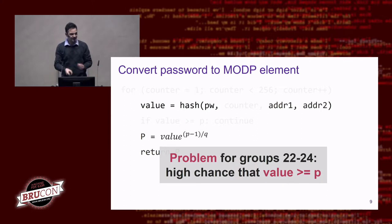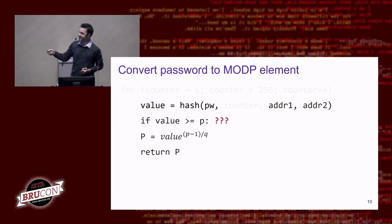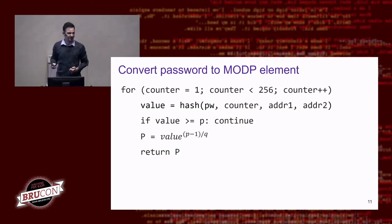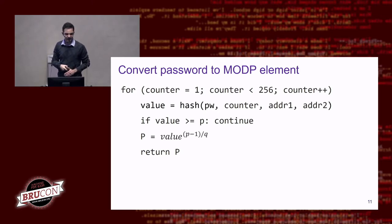The designers realized this and decided to fix it by adding an if-test: if the value is bigger than or equal to the prime, they include a counter in the algorithm. The counter starts at one and is included in the hash function. If the value is too big, we simply execute a new loop — increment the counter, hash again, and hopefully the new value is smaller than P. Multiple iterations may be needed.